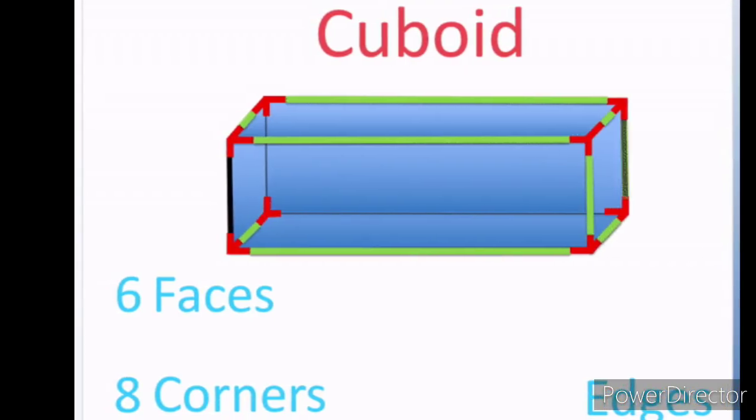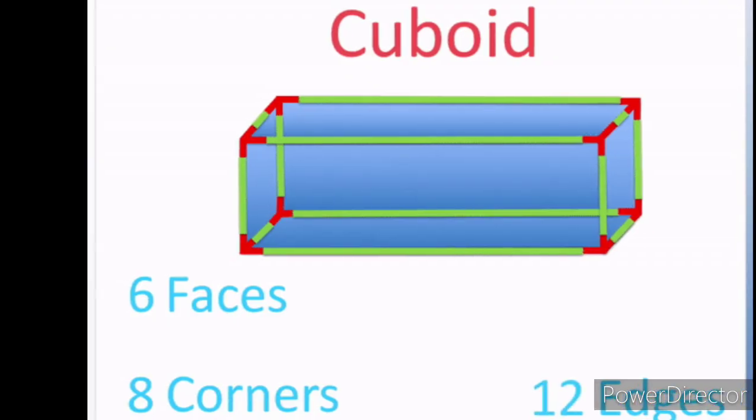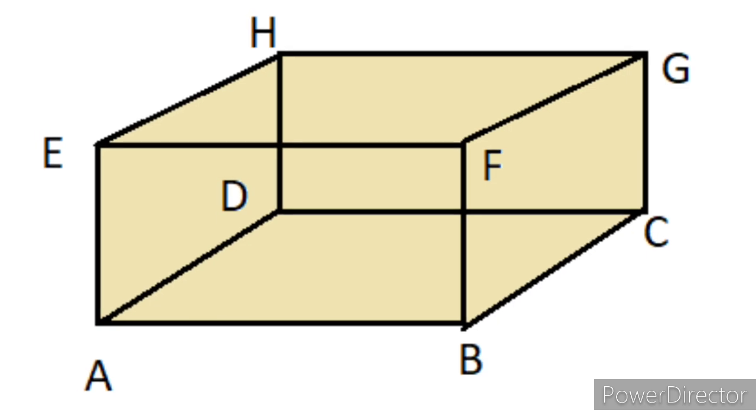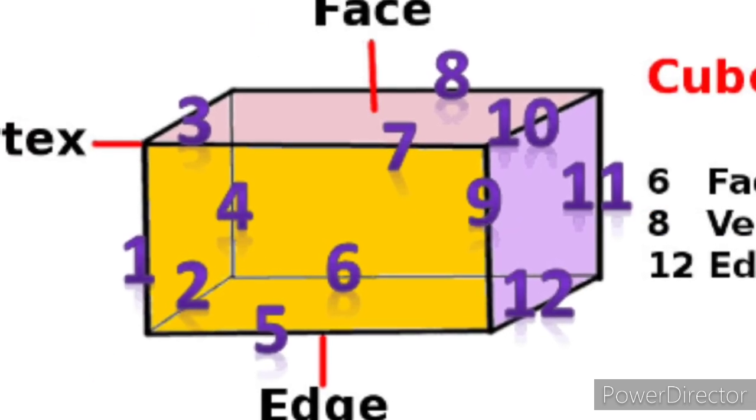But cube has all sides as squares, while in cuboid we can see rectangular sides also. So totally for cuboid, there are 8 corners and 12 edges, similar to cube.